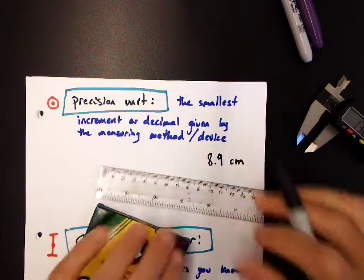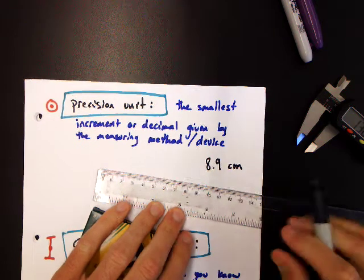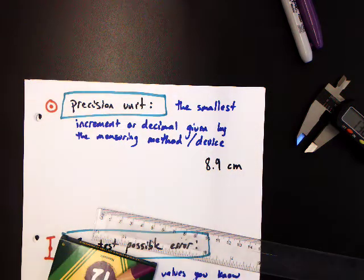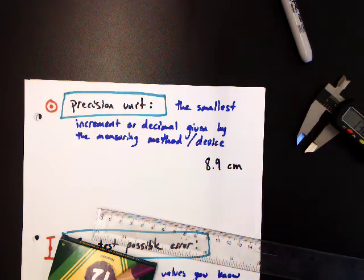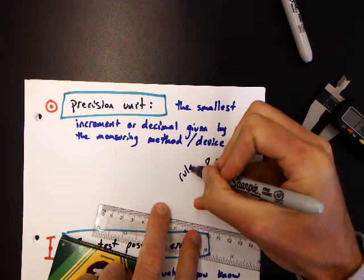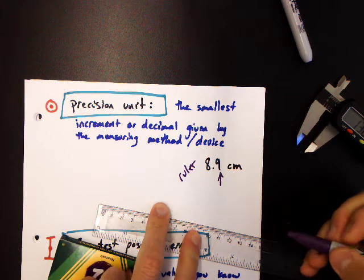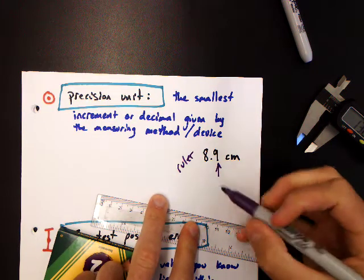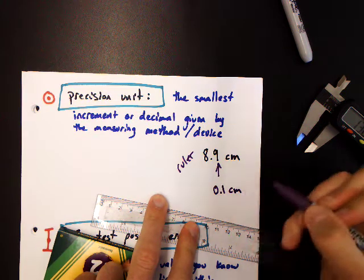The marks on this ruler are every millimeter or tenth of a centimeter. So what is the precision unit for the ruler? For the ruler, the precision unit is that decimal. That's the smallest increment given. That is 0.1 centimeters.